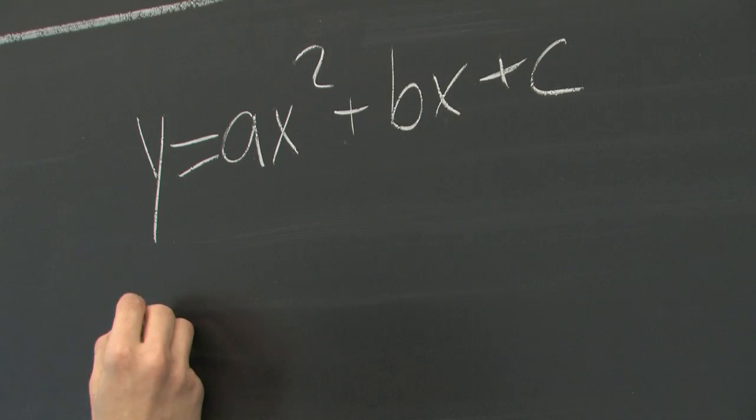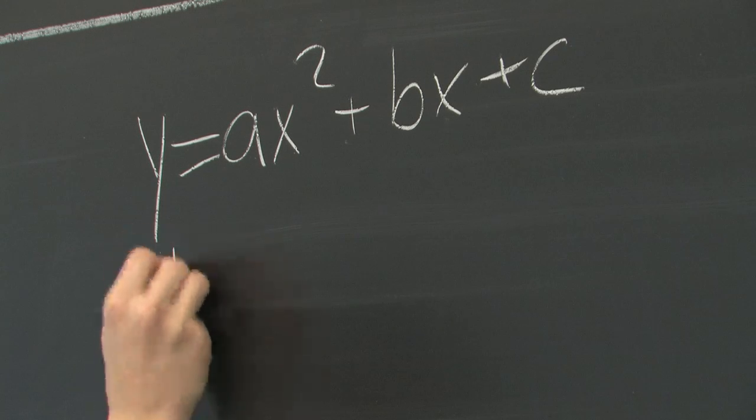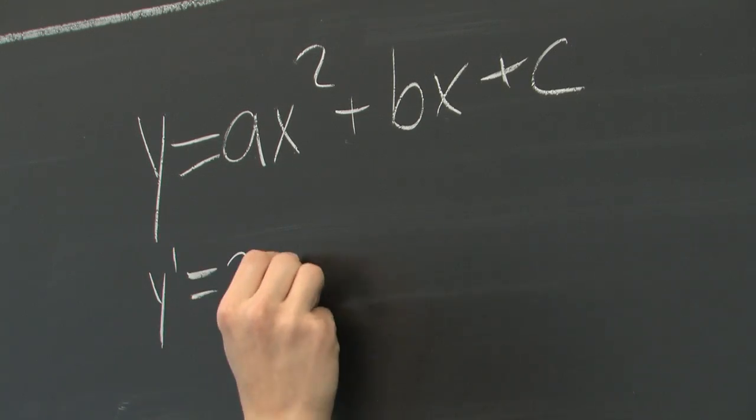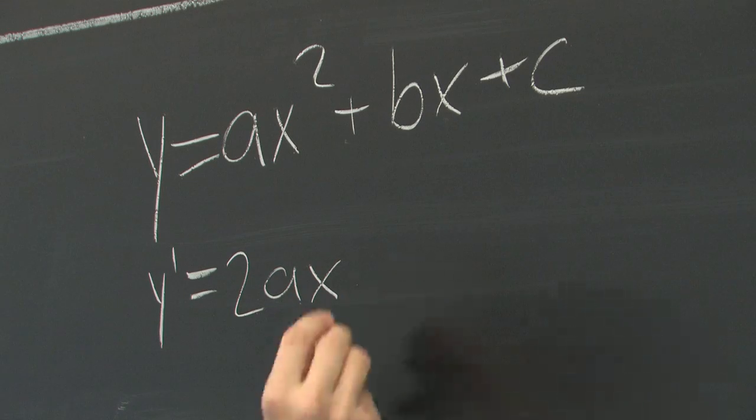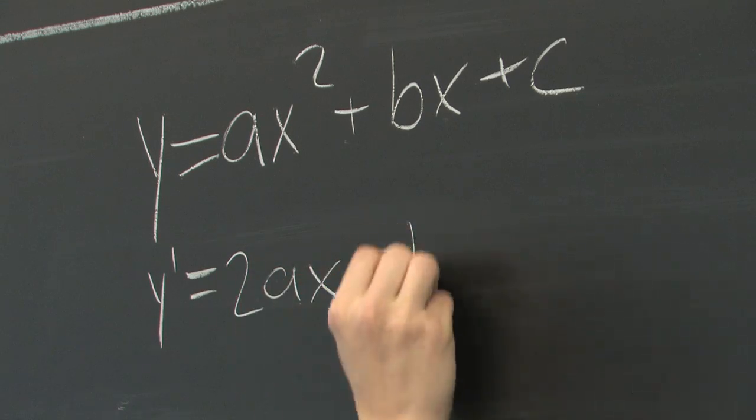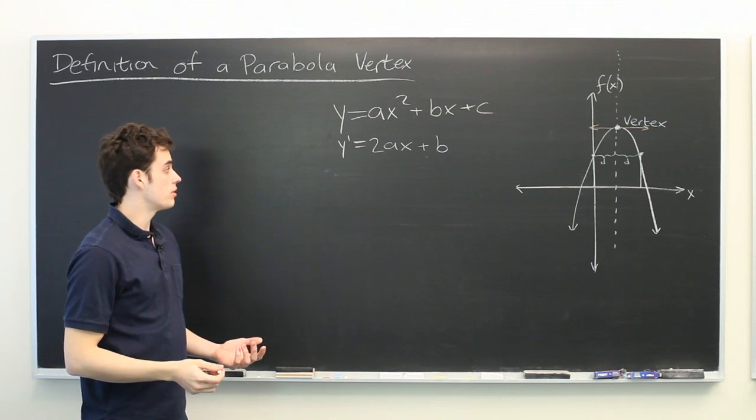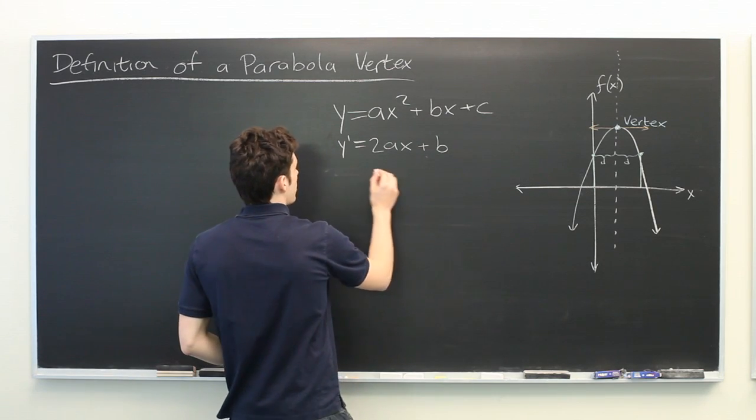Let's go ahead and take the derivative of this. We get 2ax plus b. And we want to find where this is equal to zero. So we'll set that equal to zero.